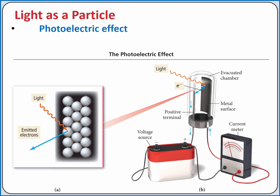Light can act as a wave or it can act as a particle. The photoelectric effect gives evidence of light acting as a particle. In the photoelectric effect, when light with a high enough energy strikes a metal, electrons are ejected from the metal.